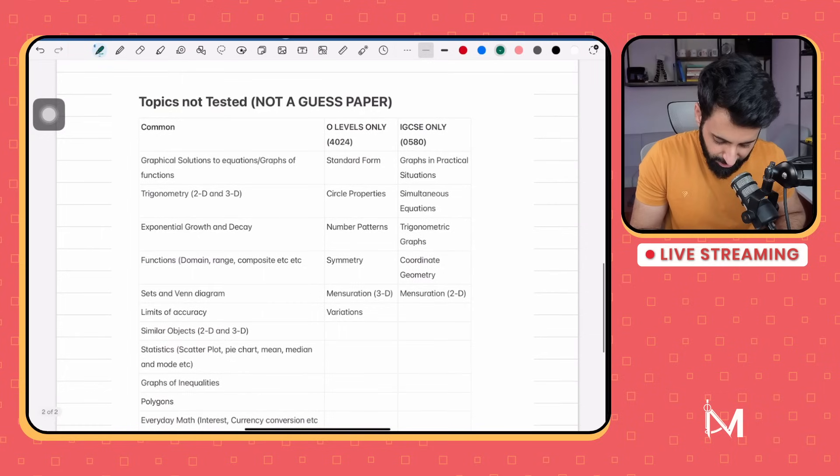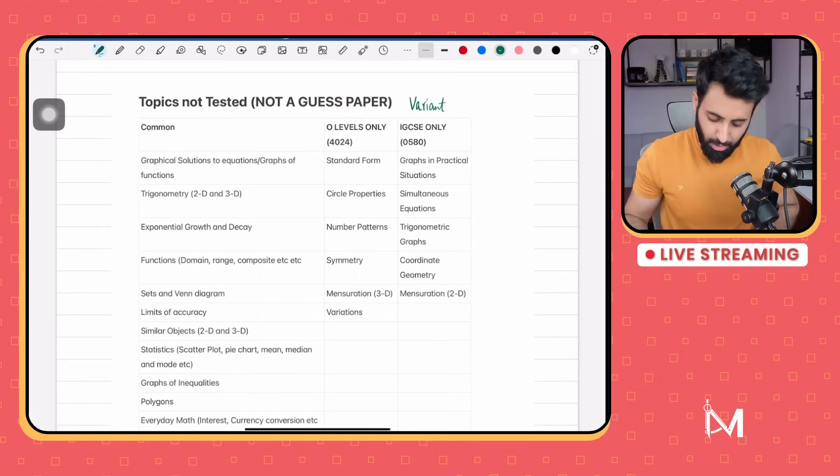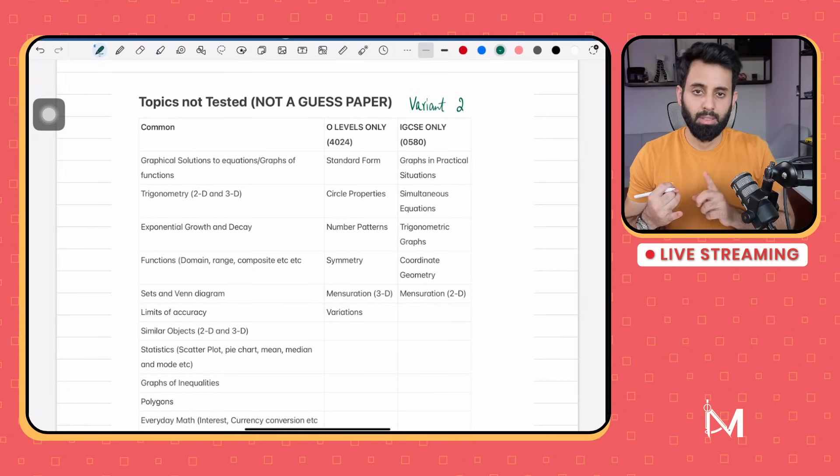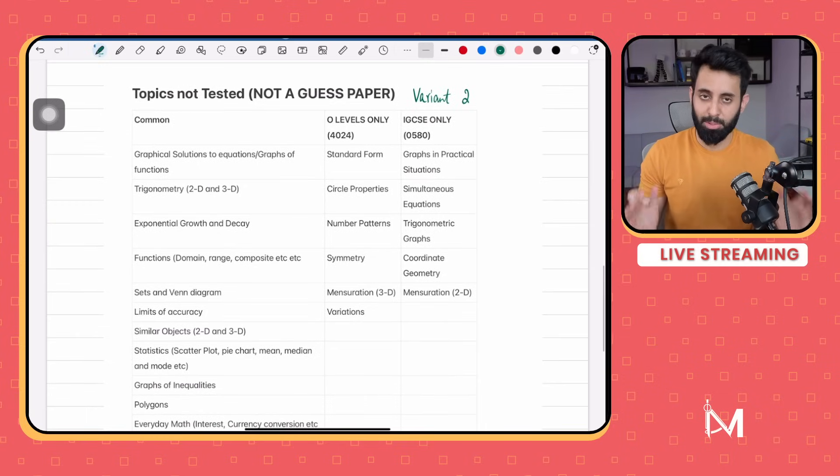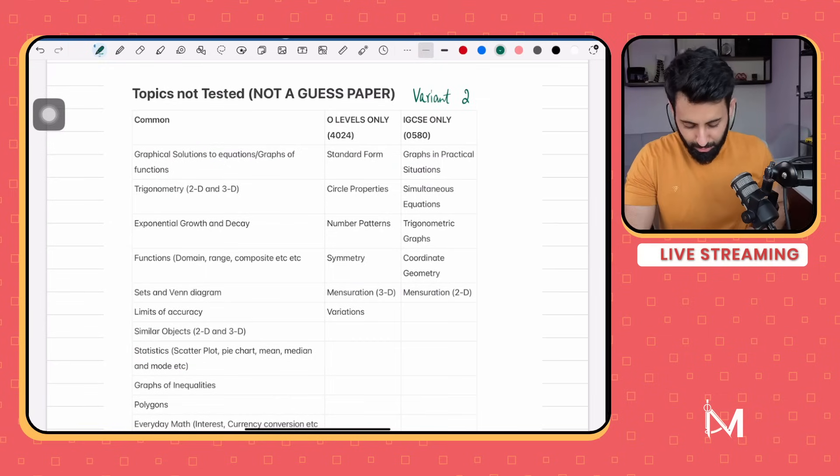Once again, please keep in mind that this is for variant two. So for O-levels, paper 12, which is 4024 paper 12, and all the topics not tested in IGCSE, which is paper 22. That means these are the topics that you can expect in paper two of O-levels and paper four of IGCSE. Remember we're talking about variant two. Let's go over them one by one.